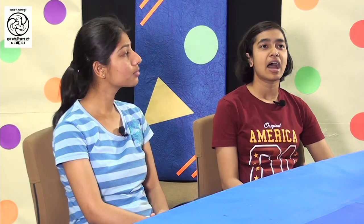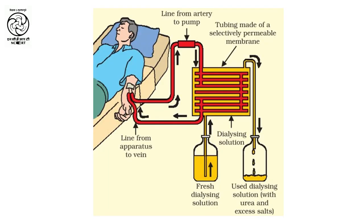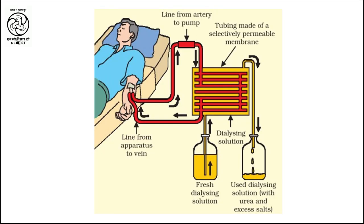How do artificial kidneys work? An artificial kidney contains a number of tubes with a semi-permeable lining suspended in a tank filled with dialyzing fluid. This fluid has the same osmotic pressure as blood except that it is devoid of nitrogenous waste. The patient's blood is passed through these tubes. During this passage, waste products from the blood pass into the dialyzing fluid by diffusion, and the purified blood is pumped back into the patient. The process is similar to the functions of the kidney, but the only difference is that selective reabsorption does not take place in artificial kidneys.